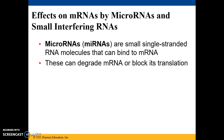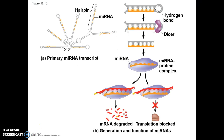Micro RNAs, like the name suggests, are small. These are single-stranded RNA molecules that can bind to messenger RNA, and their role is either in degradation of messenger RNA or blocking its translation. These micro RNAs are made from longer RNA precursors that fold back on themselves, forming hairpin regions, where the adjacent chains are linked via hydrogen bonds.